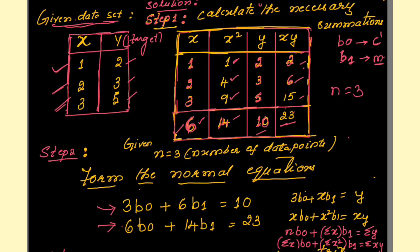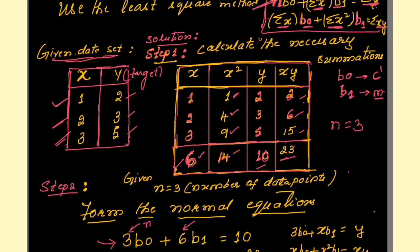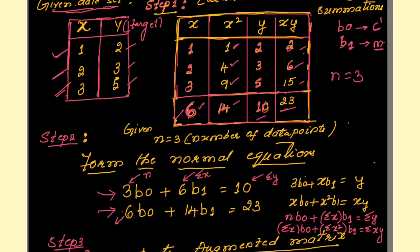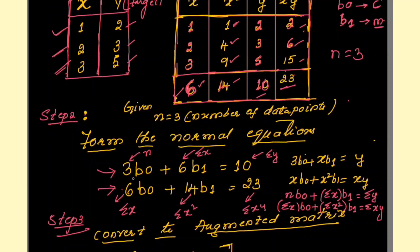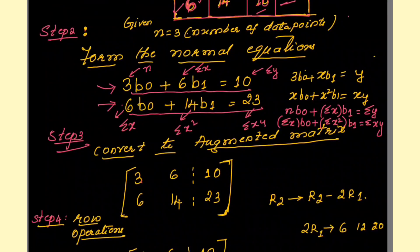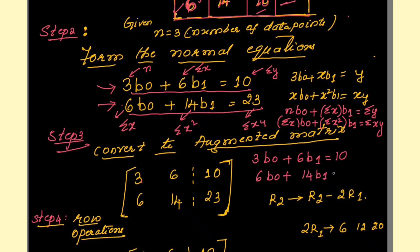After substituting, you can check: n = 3, Σx = 6, Σy = 10, Σx = 6, Σx² = 14, Σ(x·y) = 23. This gives us the two equations: 3b0 + 6b1 = 10 and 6b0 + 14b1 = 23. To apply Gaussian elimination, we need two or more linear equations, and now we have arrived at exactly these two.